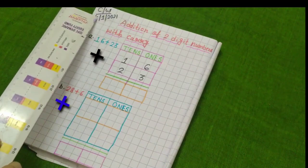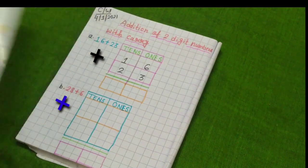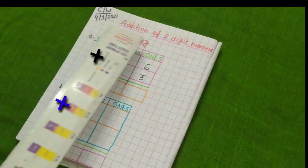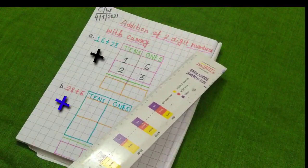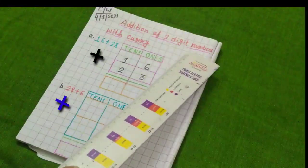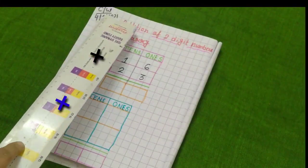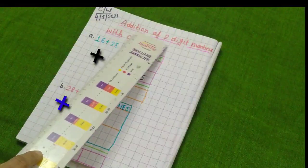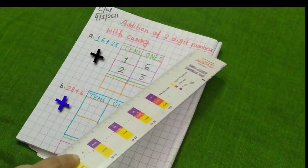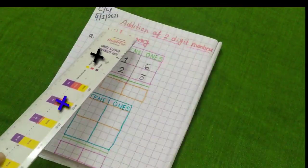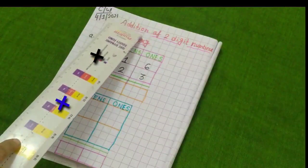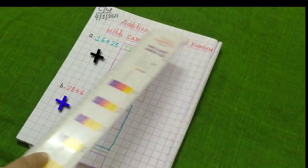First, here I have written CW means classwork and I have given the date also 4-1-2021. Then, I have written here heading. So, now I am reading the heading and please you also read with me. A-D-D-I-T-I-O-N addition of two digit D-I-G-I-T numbers N-U-M-B-E-R-S with carry W-I-T-H C-A-R-R-Y. So, addition of two digit numbers with carry.